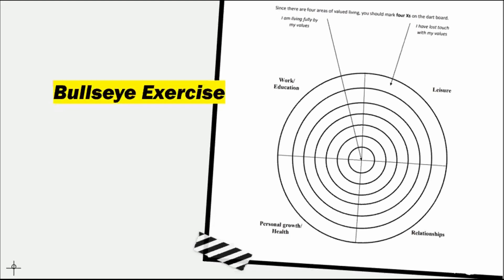After the individual has identified the values for each of those domains, they are then directed to put an X on the section in which that domain fits. The closer you are to the middle, the closer you are to engaging in those values. The farther you are outward, the less likely you are engaging in these values. When I work with clients I always talk to them about how it's not that we're always going to be a hundred percent on target — as humans we're never going to be a hundred percent living close to our values — but can we get the person a little bit closer to the middle?